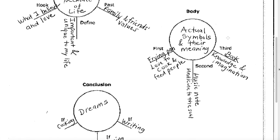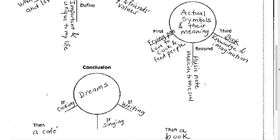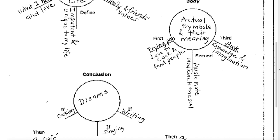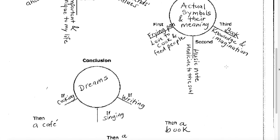In the body of my essay, the second paragraph, I talk about the actual symbols and their meanings. One symbol that would be on my necklace of life would be a frying pan, because I love to cook and I love to feed people. The second symbol would be a music note, because to me music is like medicine to the soul. And finally, my third symbol would be a book, because like Jan, I love to read and write. And to me, a book is gaining knowledge and feeding your imagination.